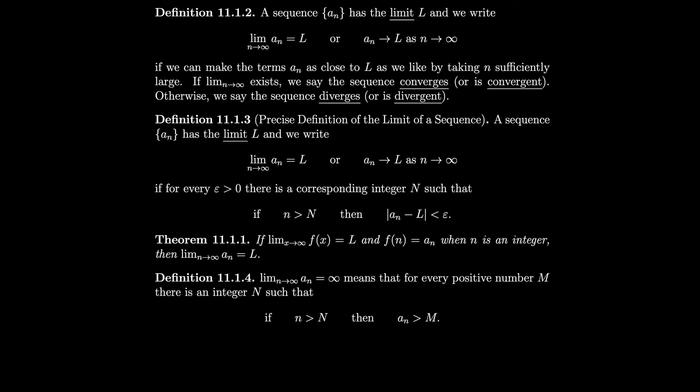The limit of an equals infinity means that for every positive number M there is an integer N such that if n > N then an > M. So if we go far enough along, we'll be bigger than every possible number we can name — meaning the sequence grows arbitrarily large.